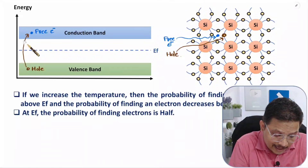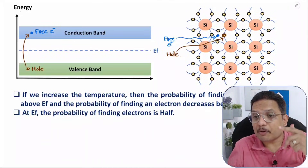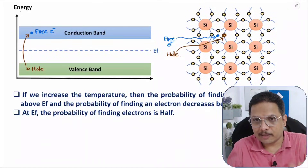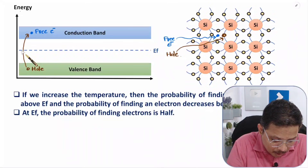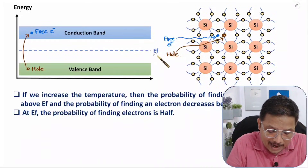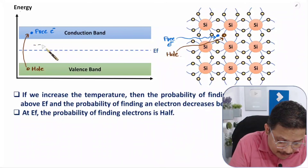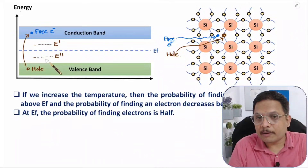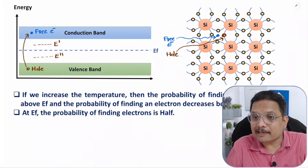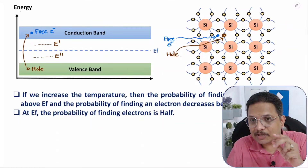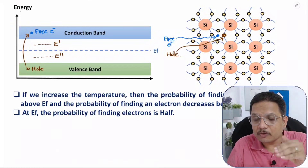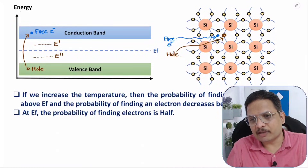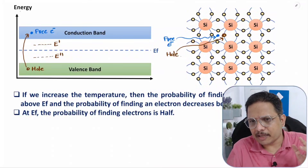The Fermi-Dirac distribution function explains, at different energy states, what is the probability of finding electrons. For example, what is the probability of an electron at EF, or at energy state E', or at energy state E''? That estimation can be done using the Fermi-Dirac distribution function.